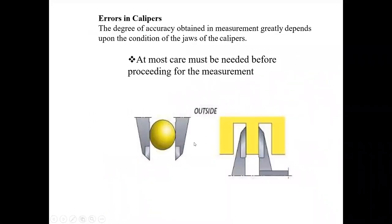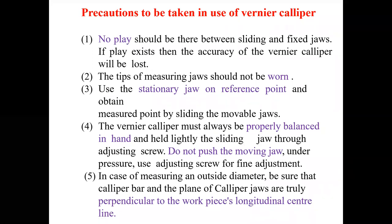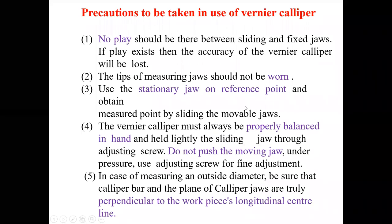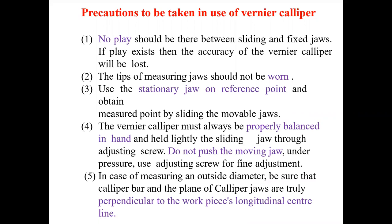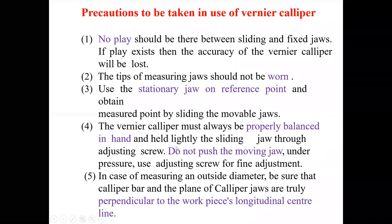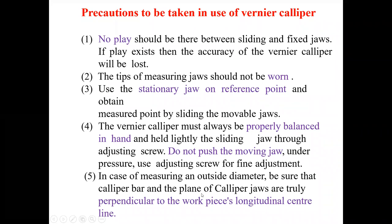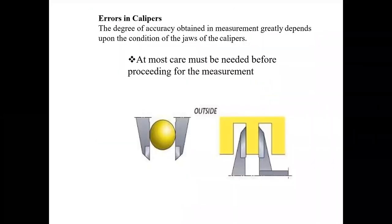When measuring the diameter of circular parts, ensure that the axis of the circular part is perpendicular to the faces. Precautions for use of vernier calipers: no play should exist between the sliding and fixed parts; tips of the measuring jaw should not be worn; use the stationary jaw on the reference point; vernier calipers must be properly balanced in hand; do not push the moving jaw under more pressure; ensure that the caliper bar and the plane of the caliper jaws are fully perpendicular to the workpiece.